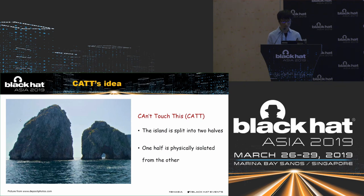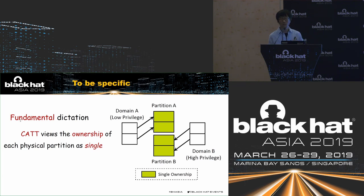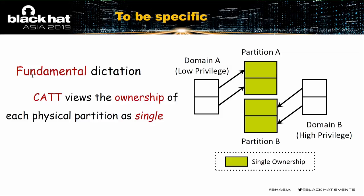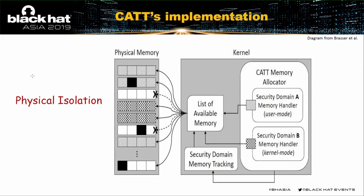CAT views the ownership of each physical partition as single. A domain has only access to its own partition A, and any memory request from an individual domain will be served only by its own partition. In a nutshell, single ownership means each security domain has access only to its own partition. In CAT's current implementation, it divides physical memory into user and kernel partitions, with guarding rows placed between these partitions.